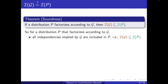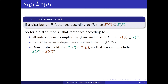Now I'm asking whether P can have an independence that is not included in G. The answer is yes, you can have such a P. Framing the question differently: does it also hold that IP is a subset of IG, so that together I can conclude they are equal to each other? Because the answer to the first question is yes, the answer here should be no — and it is no, but it's almost yes.